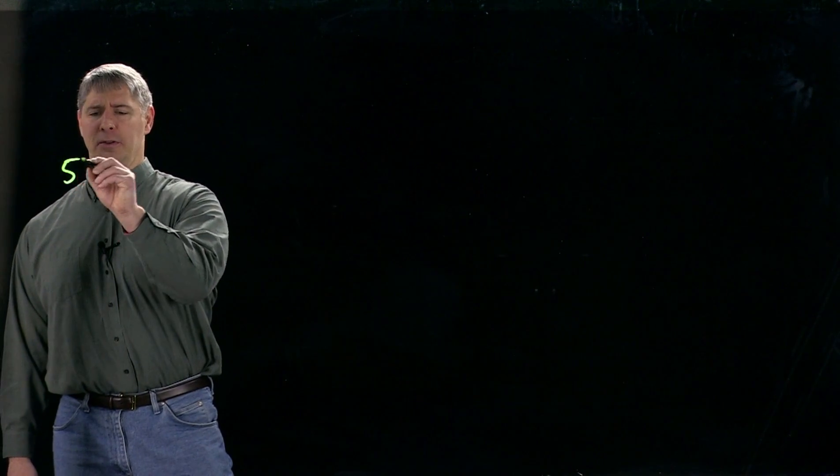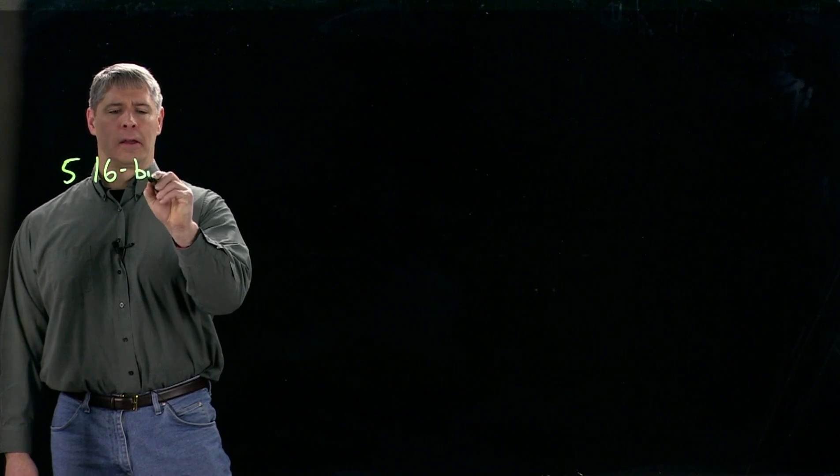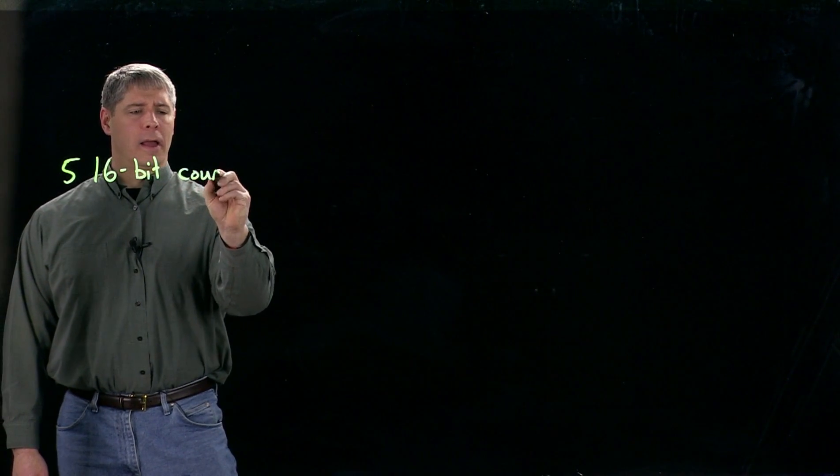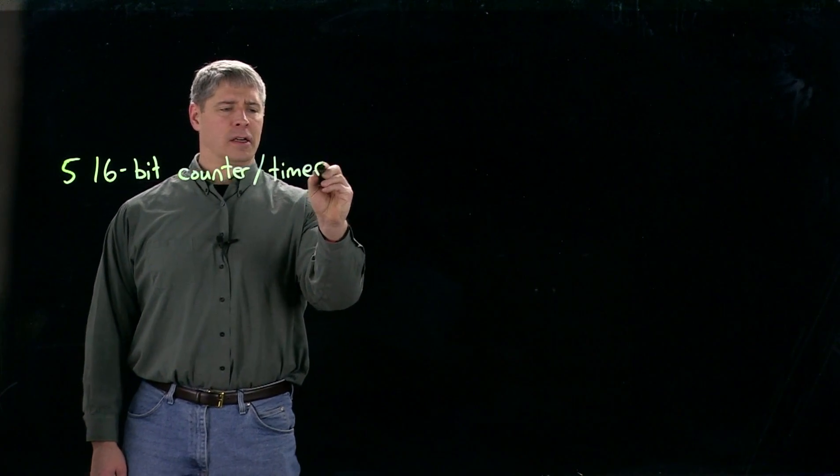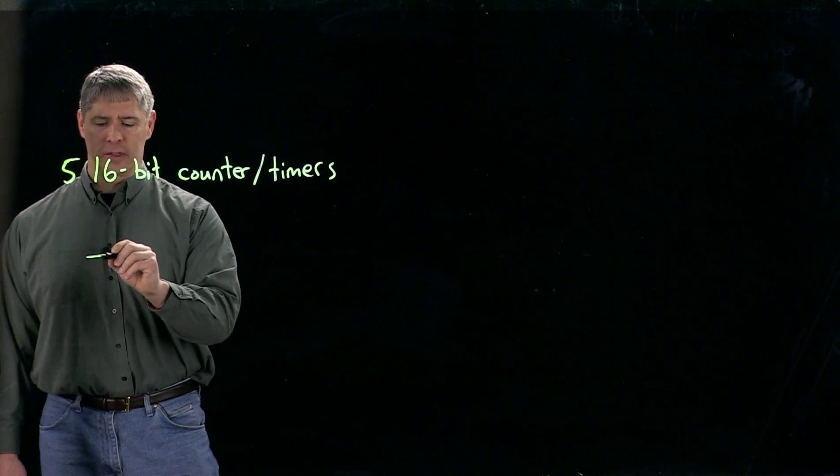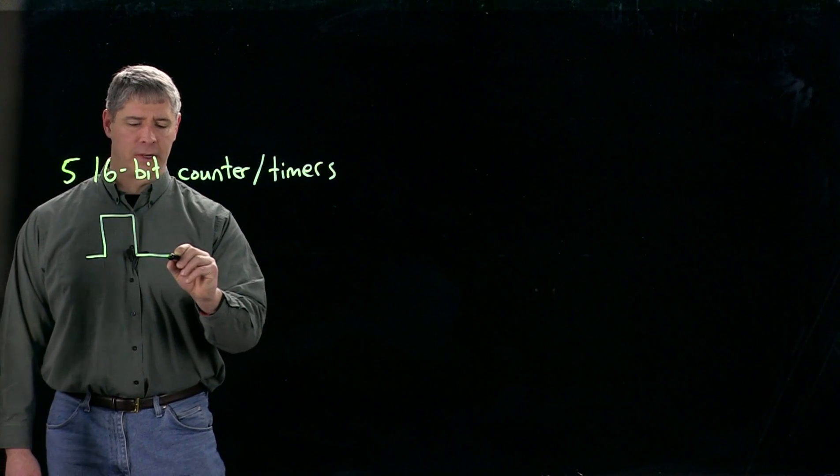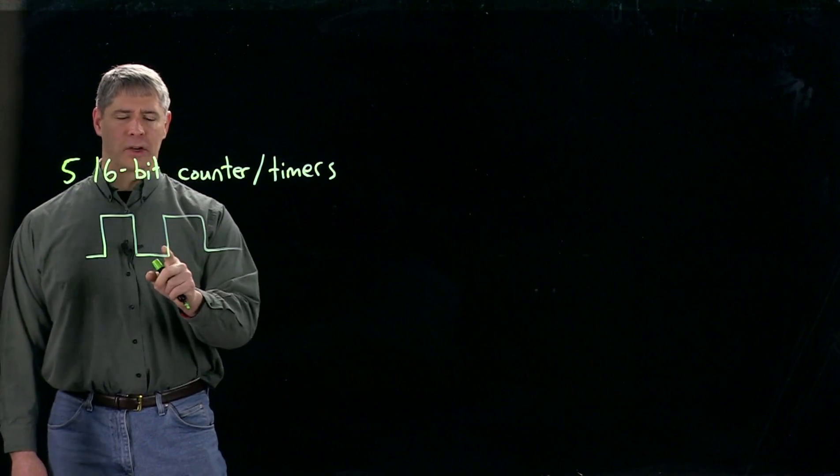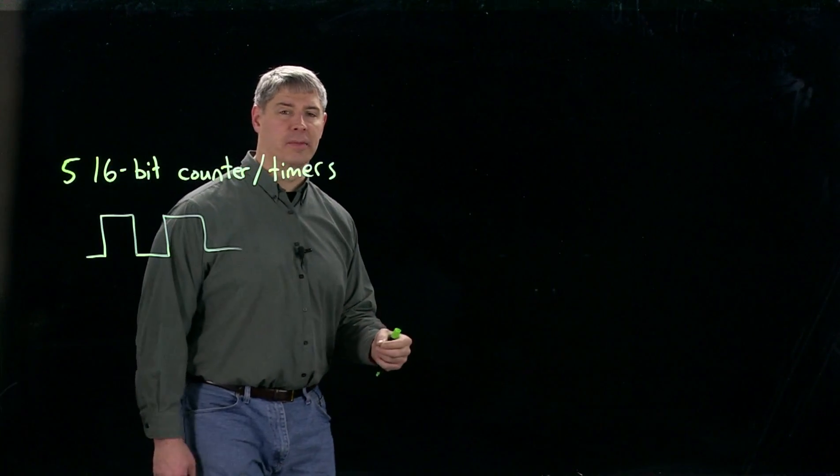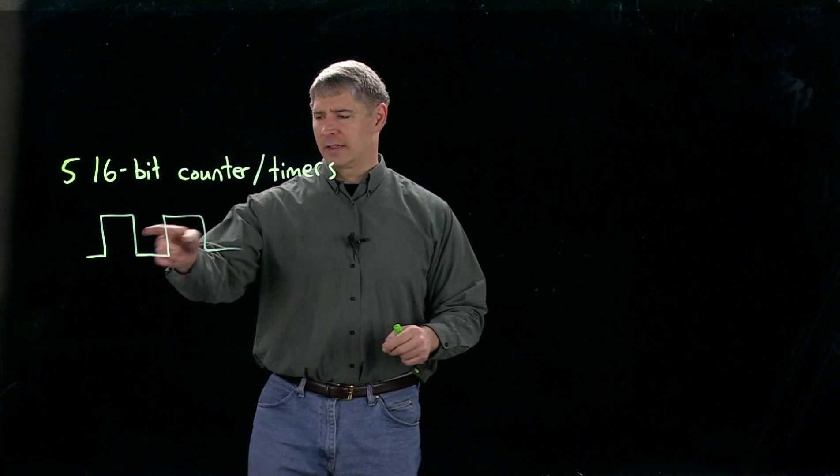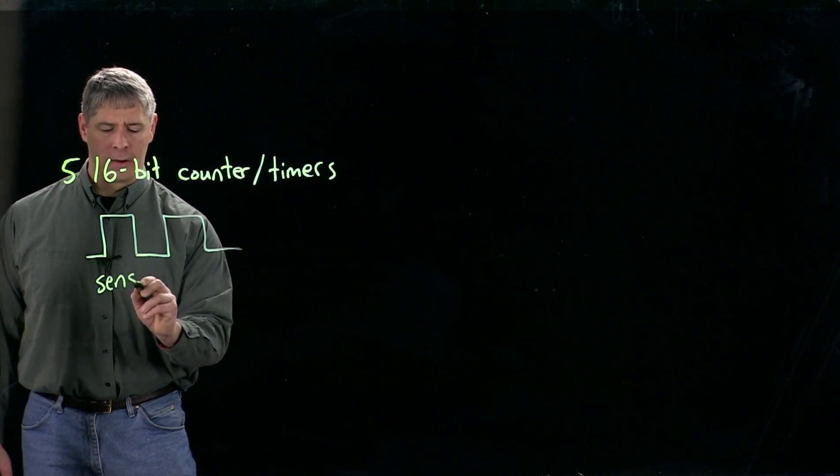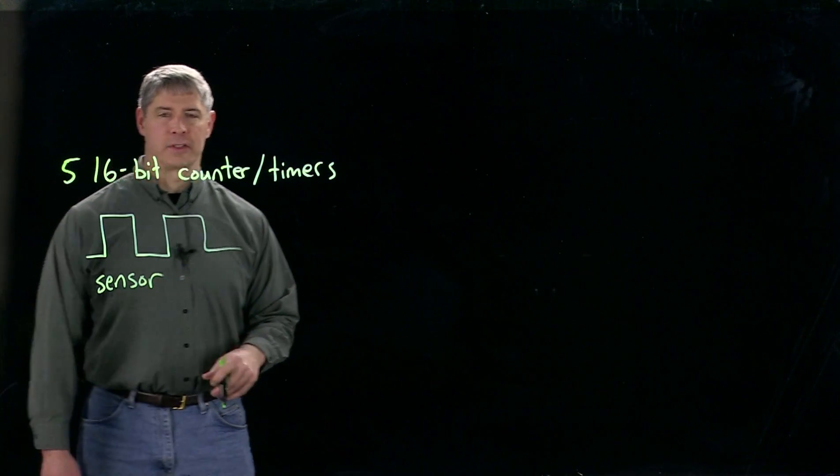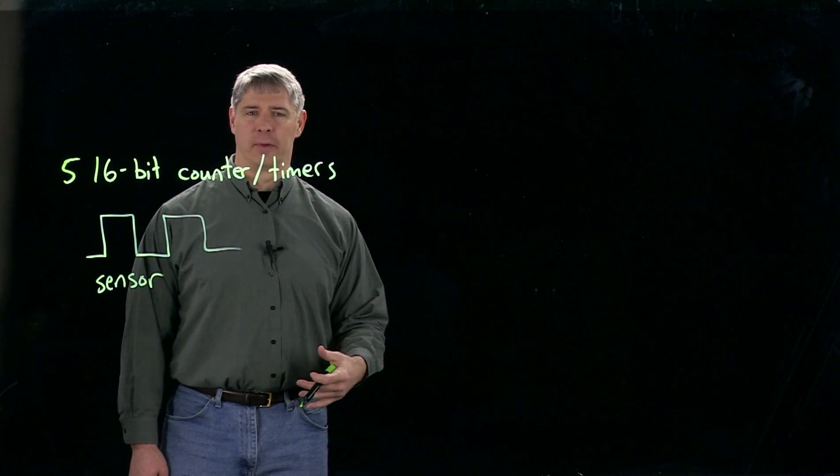The PIC32 has five 16-bit counter timers. What these do is they just count the rising edge of digital pulses. So we have a digital pulse train coming into the counter. Every time an edge goes high, the counter increments. This pulse train could be coming from a sensor, for instance, maybe an encoder on a motor.